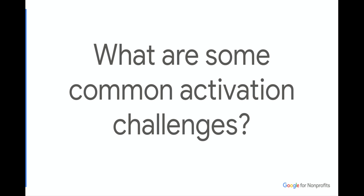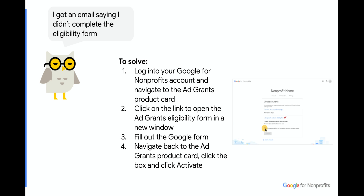There are two common activation challenges that nonprofits might face. The first is if you get an email saying you didn't complete the eligibility form — that might mean you forgot to go to that Google form or submit it. Log back into Google for Nonprofits, navigate to the Ad Grants card, click to complete the form, make sure you submit it, and then come back to the Ad Grants card, click the button letting us know you've completed the form, and click Activate. That should solve your problem.